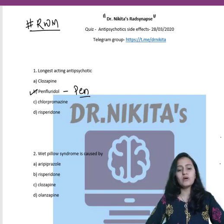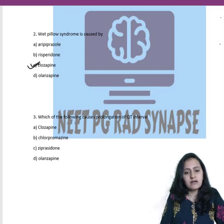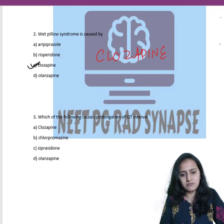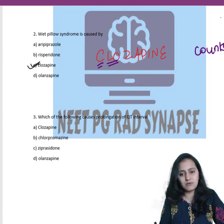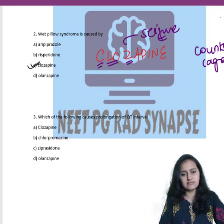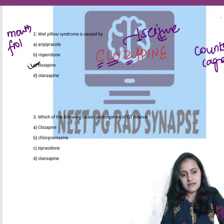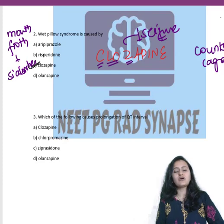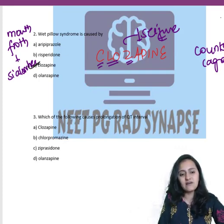Q2: What causes wet pillow syndrome? The answer is Clozapine. The mnemonic for Clozapine's side effects: C — counts low, meaning WBC counts low, so it causes agranulocytosis. Z — seizures, as it decreases the seizure threshold. And when a person has seizures, there is mouth frothing, so it causes sialorrhea — excessive salivation and drooling — which makes the pillow wet. That is wet pillow syndrome.